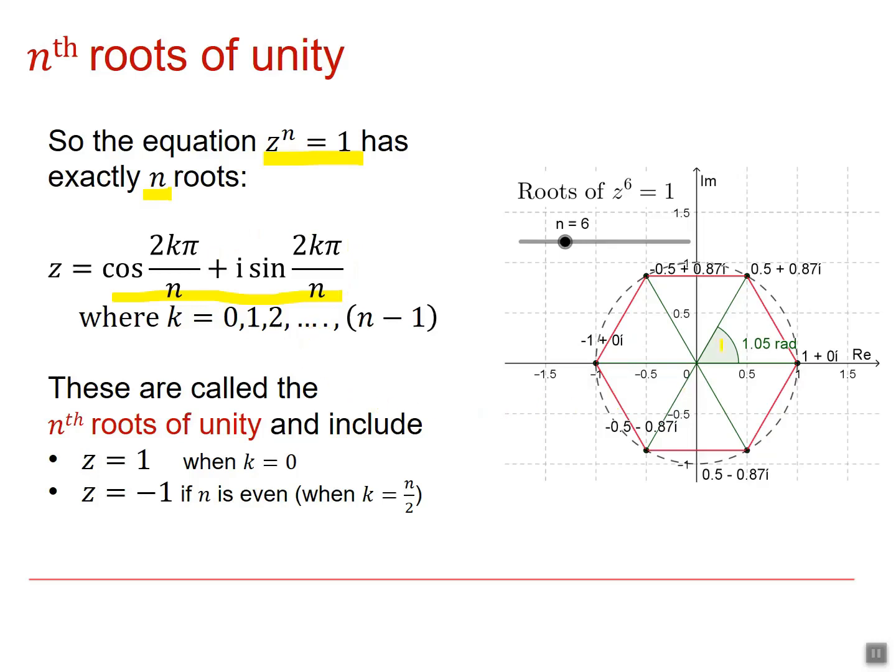If we look at this diagram over here, we've got the six points. This is k equals 0, k equals 1, 2, 3, 4 and 5.